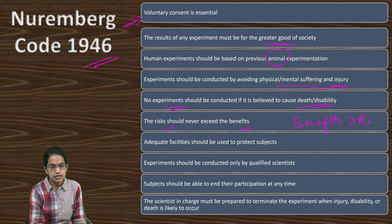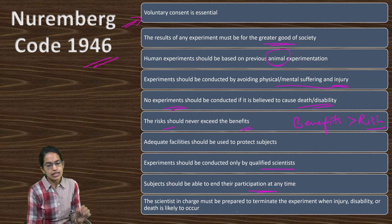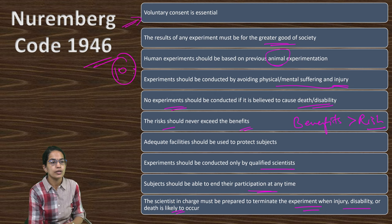Adequate facilities should be provided. Experiments should be conducted only by qualified scientists. Subjects should be able to end their participation and be allowed to withdraw from the study at any point. Scientists in charge must be prepared to terminate the experiment if any injury, disability, or death occurs. These are the 10 codes given under the Nuremberg Code of 1946.